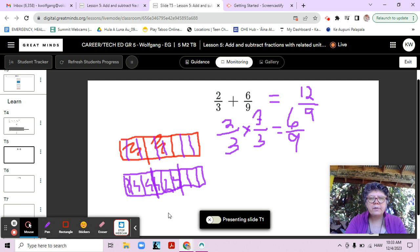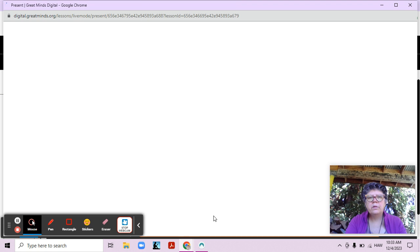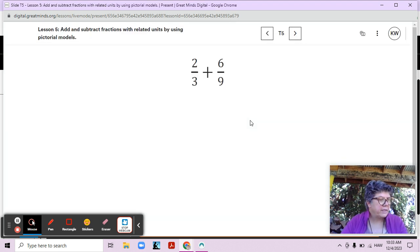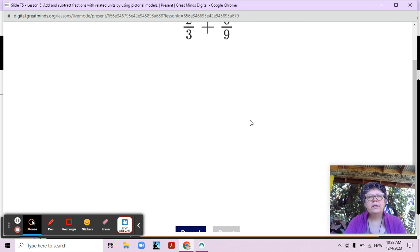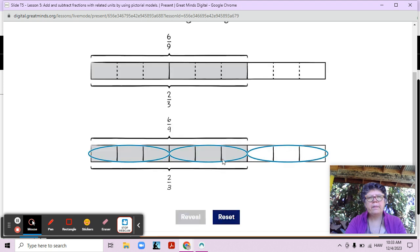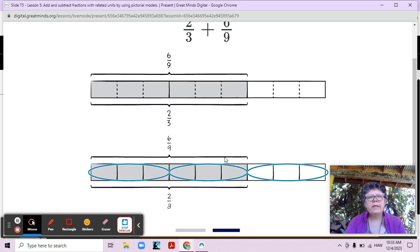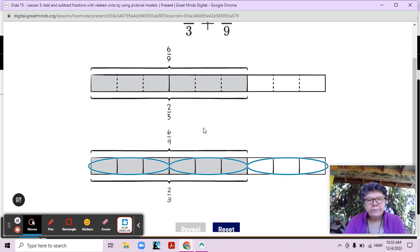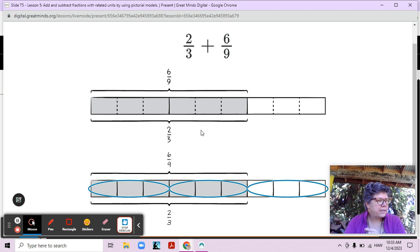Let's try something else here. I think we might have a different tape diagram to look at. There we go. Maybe. There we go. Okay, so two-thirds is the same as six-ninths, same as the tape diagrams I drew, right? Just a little bit neater. And six-ninths is the same as two-thirds. So six-ninths plus six-ninths would be twelve-ninths.